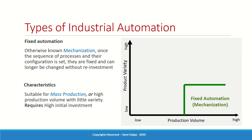For example, if today you're making a bottle and tomorrow you want to change the bottle's shape, this can't be done by simply changing a program. You may have to change the machine altogether, stop operations, reconfigure the whole system, and then run again. That's why this is called fixed automation — it's designated for mass production. You know you need millions of bottles, so you build it fixed, run it, and you're good.